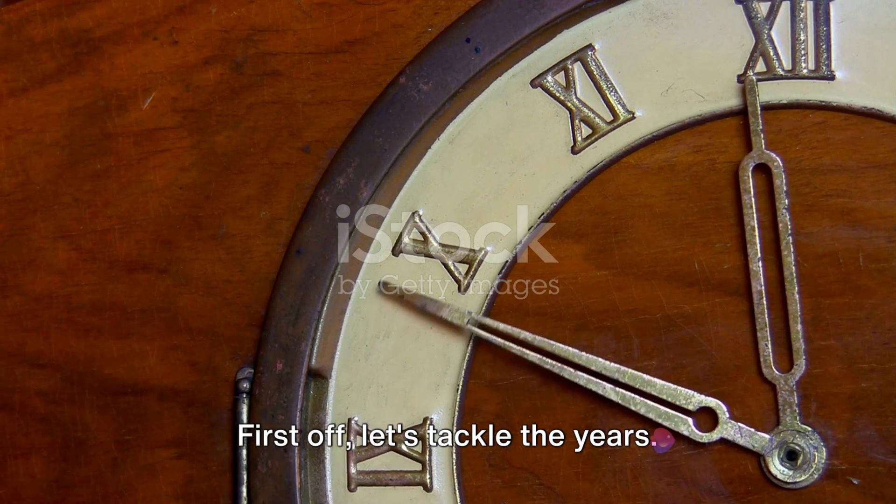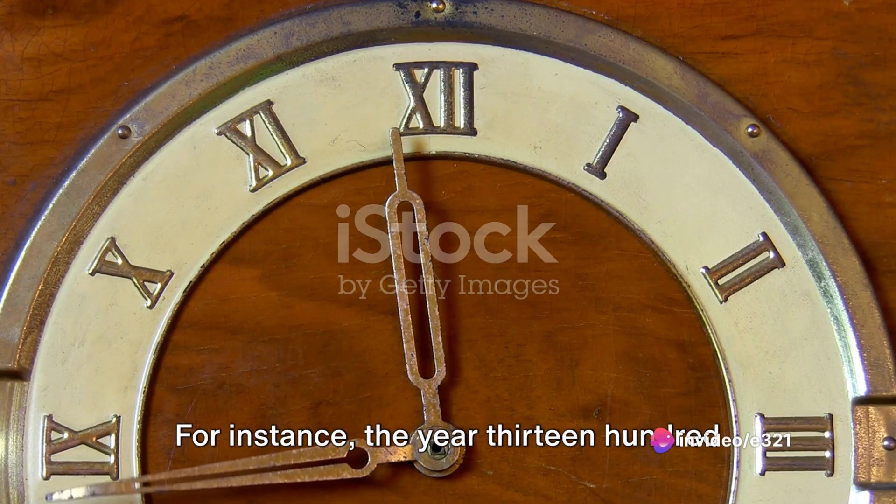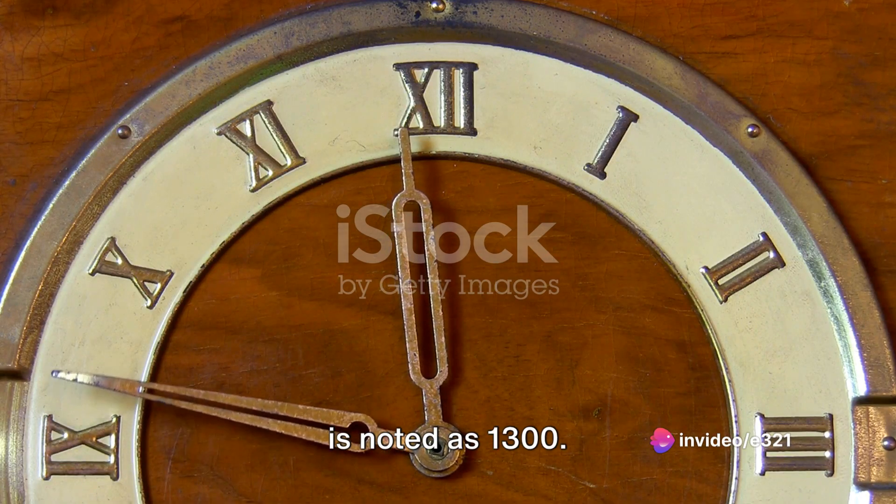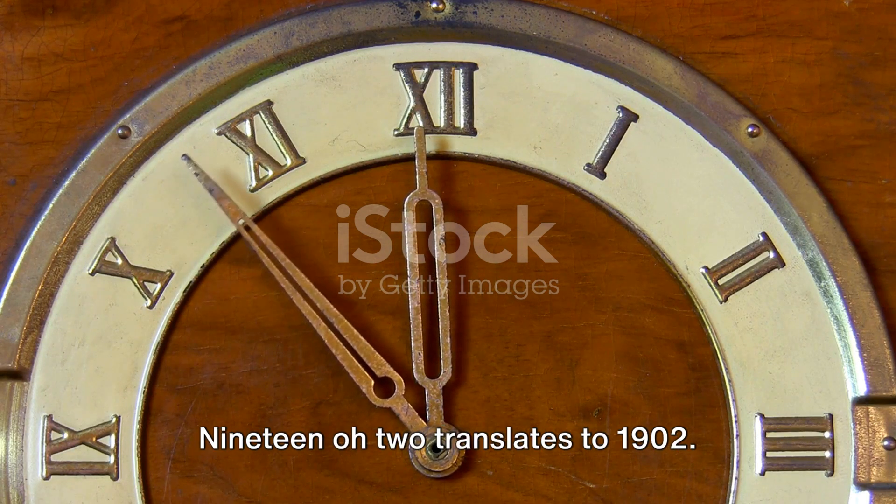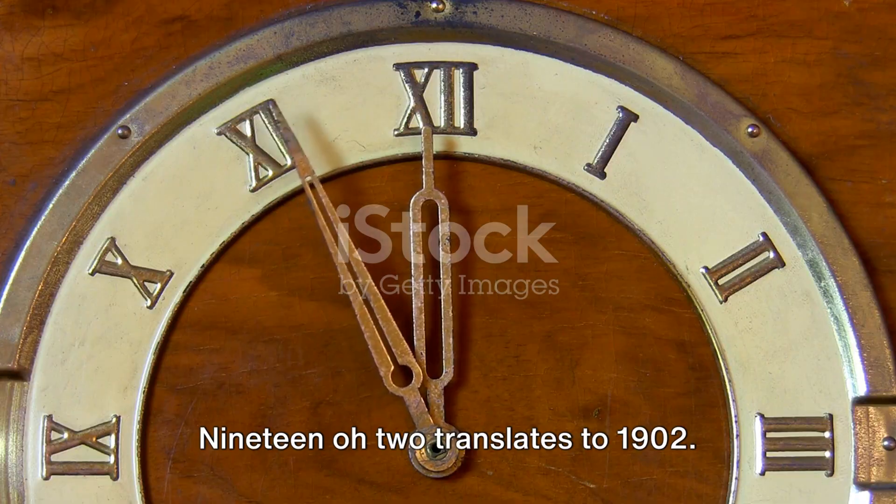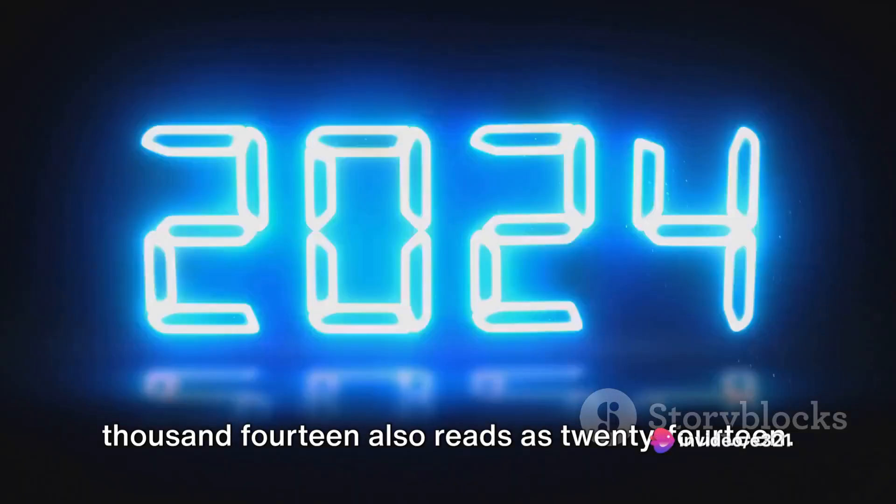First off, let's tackle the years. It's simpler than you think. For instance, the year 1300 is noted as 1300. 1492? That's 1492. 1902 translates to 1902. 2000 becomes 2000, while 2014 also reads as 2014.